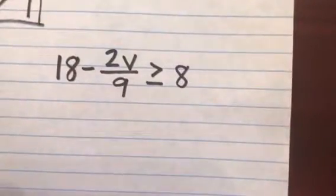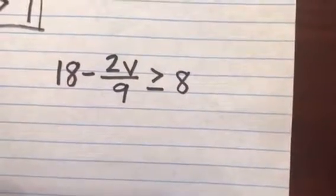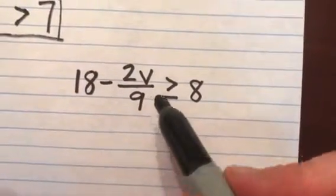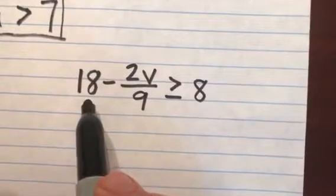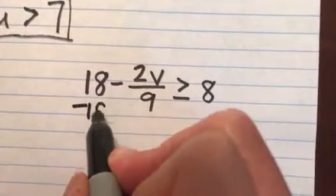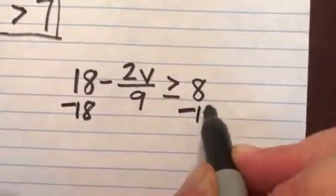Let's look at a second example. 18 minus 2v over 9 is greater than or equal to 8. Again, my goal is to get v alone, so now I want to get rid of the 18 on this side. It's a positive 18, and so I would subtract it from both sides of my inequality.